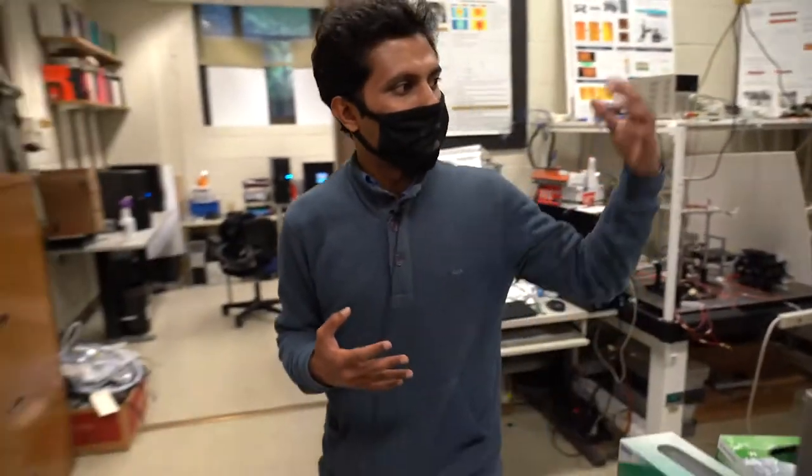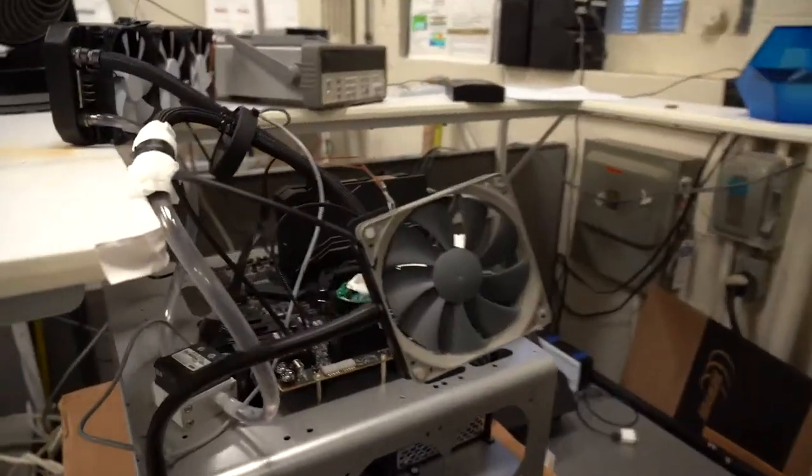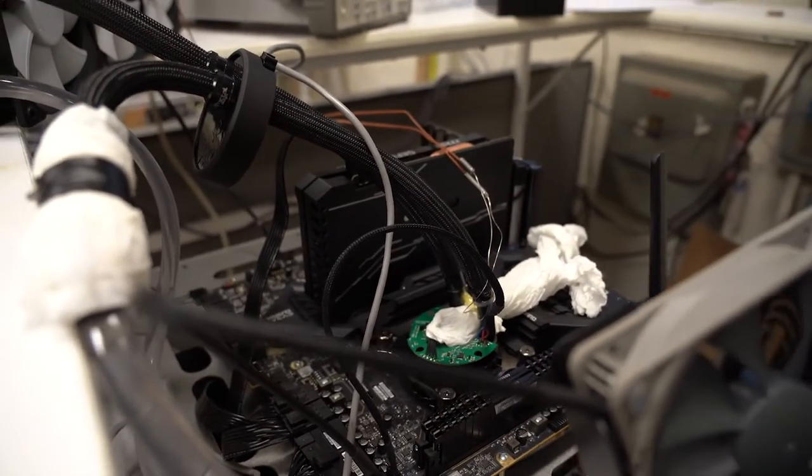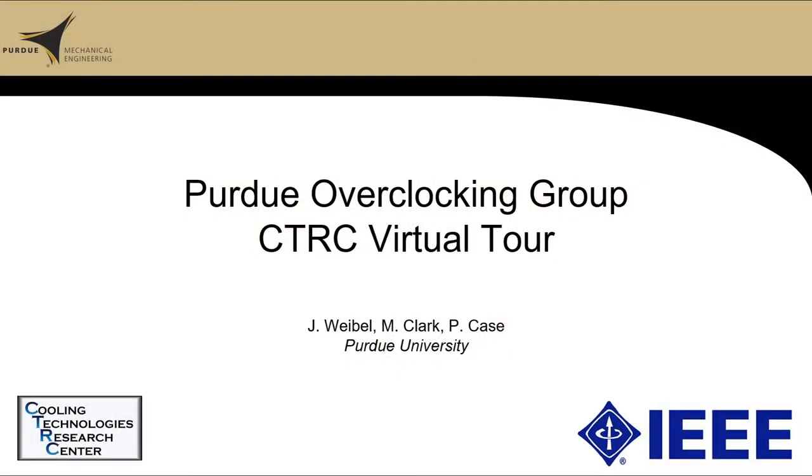As we move to the next part of the lab, we have an overclocking facility developed by my colleague Peyton. My name is Peyton Case and I am the undergraduate head of the Purdue Overclocking Group. We are a collaboration between IEEE and the CTRC intended to research and develop novel cooling solutions for high-performance computers and compete nationally against university teams to produce the fastest PCs possible.